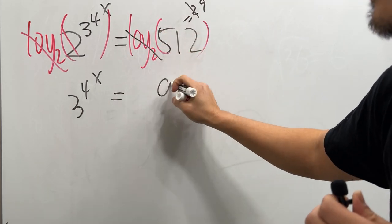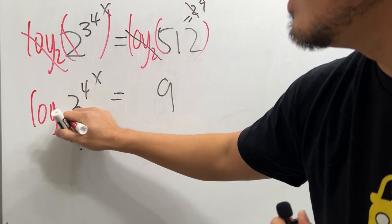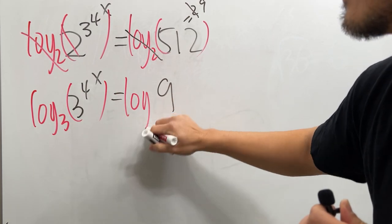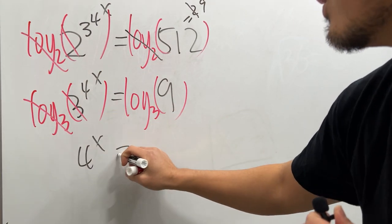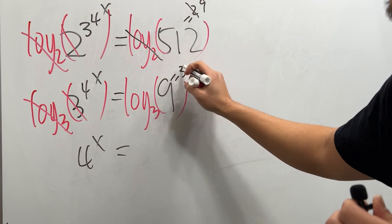And then let's take log base 3 on both sides so that on the left hand side this and that will cancel. So that means we get 4 to the x power is equal to this 9, which is the same as 3 to the second power, so that this and that will cancel, so we just have 2.